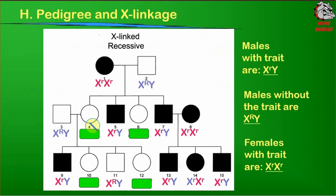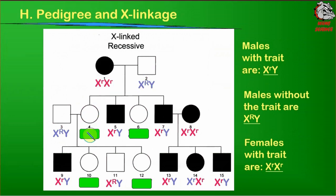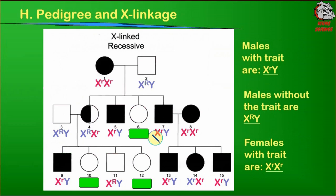Individual number 4 has to get X big R from the father, because the father either gives an X or Y chromosome, and since this is a girl, she gets the X with big R. This mother can only give X little r. So individual number 4 is X big R, X little r — she is a carrier. We can half-shade her to indicate she's a carrier of the trait.